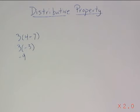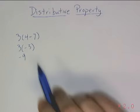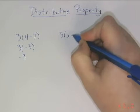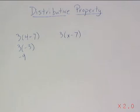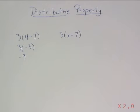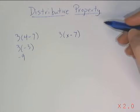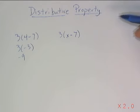But what if we can't do what's in the parentheses first? What if instead of 4 minus 7, our work in the parentheses said to do something like x minus 7? Unless I know what x is, I'm not going to be able to figure out what the quantity x minus 7 equals. Does that mean that I'm stuck? Actually, no. I can keep going. That's where the distributive property comes in.